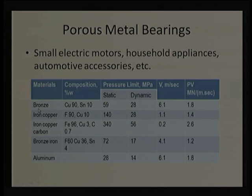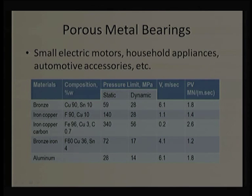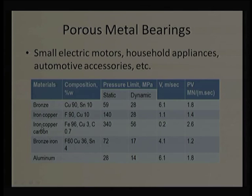Where copper content is higher, thermal conductivity is higher and speed of operation is relatively higher. Bronze and aluminum bearings can operate at 6.1 meters per second. In contrast, iron-copper with 90% iron has a lower permissible speed of 1.1 m/s, but offers a high pressure limit of 140 MPa.